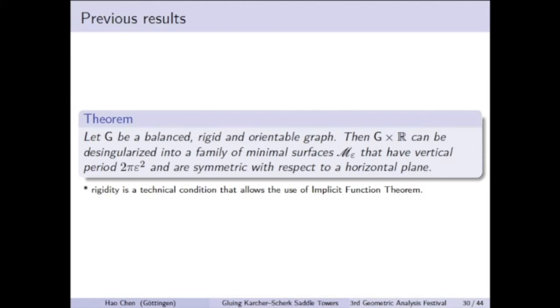So all previous constructions that glue saddle towers is basically saying this theorem. If you have a graph that is balanced, rigid, and oriented, then you can desingularize the graph times R into a minimal surface with horizontal reflection plane.